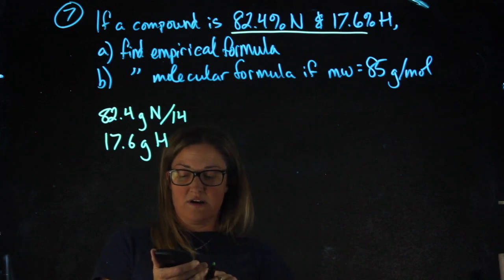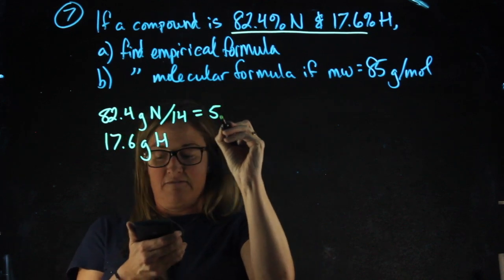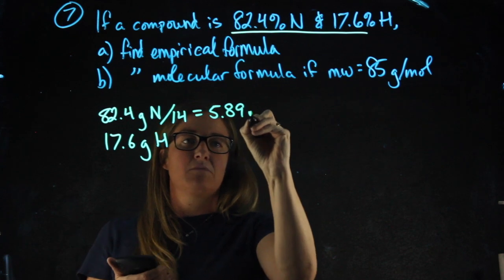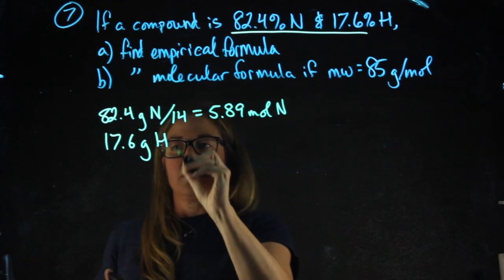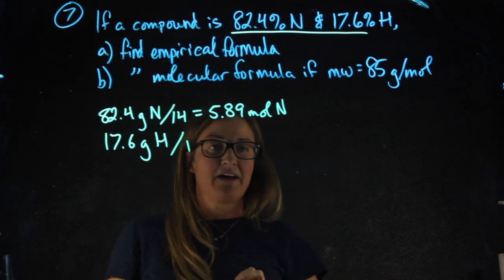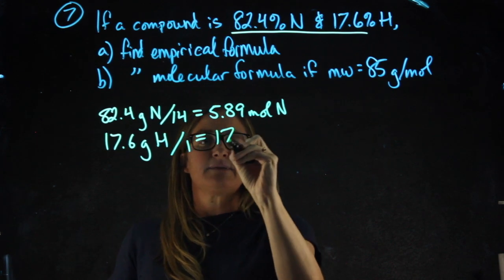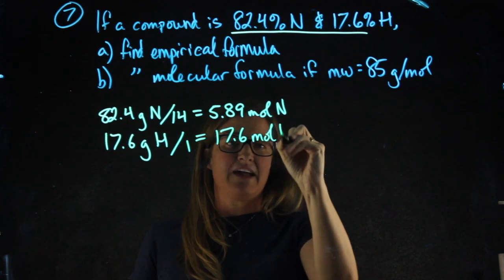82.4 divided by 14, 5.89 moles of N. 17.6 divided by the molecular weight of hydrogen, which is 1, gives me 17.6 moles of H.